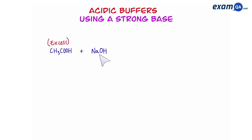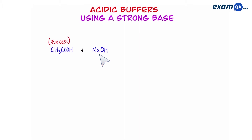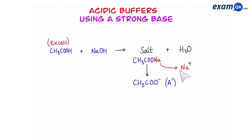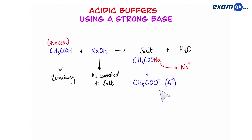We know that acid plus base gives us salt and water. The salt that we're going to create is going to be sodium ethanoate. Because it's an ionic compound it will dissociate to give us sodium ions and ethanoate ions. As for the weak acid, because it was in excess some will still be remaining, and as for the strong base, that's all been used up and converted into salt.